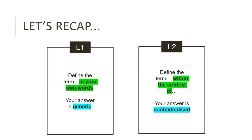Let's quickly recap. How do we identify the difference between a Level 1 and Level 2 definition question? For Level 1, look for the words 'in your own words.' Level 2 will say 'within the context of.' Depending on the definition question, our answers will be different. For Level 1, our answer can be very general or generic. For Level 2, we have to contextualize our answer — in this case linking it to the Cold War. If it's Level 1, we don't have to do that because our definition can be generic.